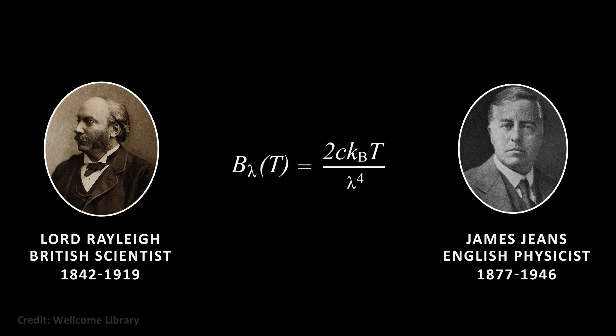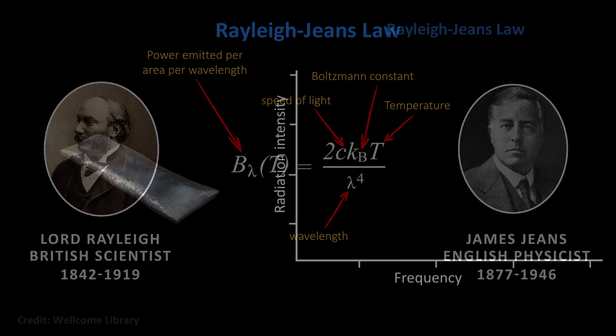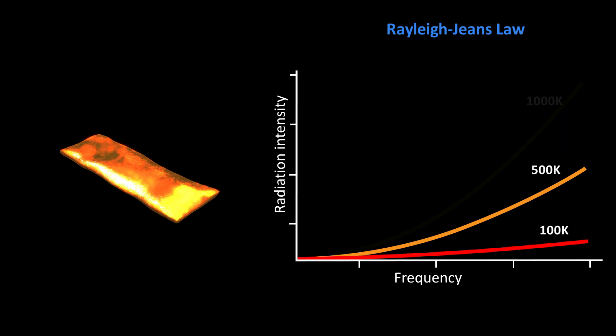In 1900, two scientists, Lord Rayleigh and James Jeans, had used experimental data to come up with a law of how black bodies emit electromagnetic radiation. The problem was that according to their theory, a black body will send out energy in any frequency range allowed by the temperature. And the hotter the object, the more frequencies became available, and the more energy would be emitted.